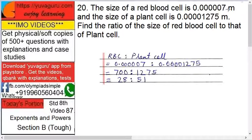...is 0.000007 meters and size of the plant cell is 0.0001275 meters. Find the ratio of the size of red blood cell to that of the plant cell.